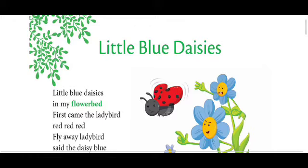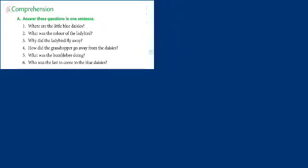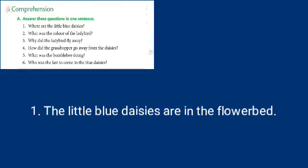Today in page number 58, answer these questions in one sentence. There are six questions given for you. You have to answer each question in one sentence. First question: where are the little blue daisies living? The answer is: the little blue daisies are in the flower bed.